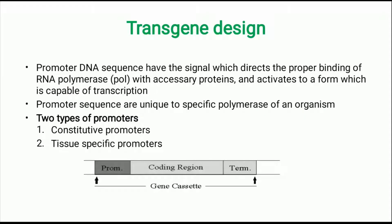In general, the expression gene consists of a promoter that is specific to the organism, followed by the gene of interest, followed by a terminator sequence containing the stop signal. Promoter DNA sequences have the signal which directs the proper binding of the RNA polymerase with accessory proteins and activates it to form a complex capable of transcription. The promoter sequences are unique to specific polymerases of an organism.